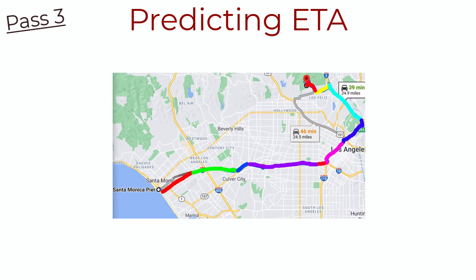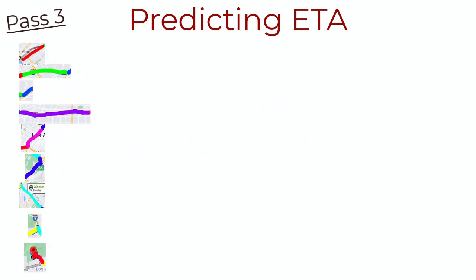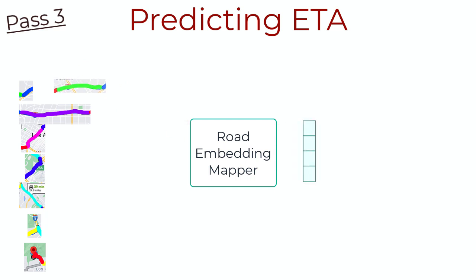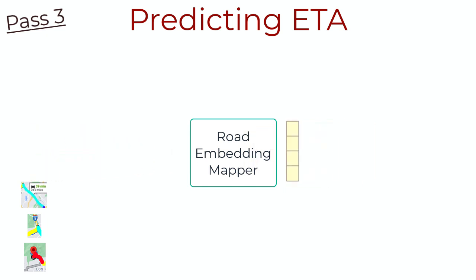Step three would be to determine the road segments along the path. Step four, during the train phase, we could have stored all the road segments and embeddings into a dictionary, like I mentioned before. So during inference now, all we need to do is just reference each road segment by ID to that dictionary store and get the corresponding road segment embeddings.